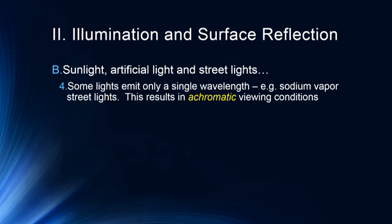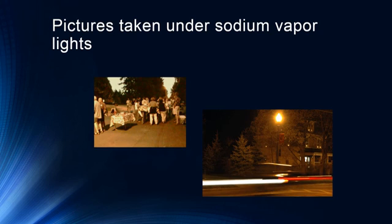Some lights are designed to emit only a single wavelength — for example, sodium vapor streetlights. One reason cities use sodium vapor streetlights is so that astronomers can filter out light pollution, since a single-wavelength source can be completely blocked with the right filter. Anyone who has lived in a city and then gone out to the countryside is often astonished by how bright the stars are away from the city — a truly remarkable experience. In many cities, sodium vapor streetlights remain common because of this benefit to astronomy.